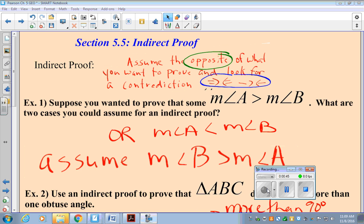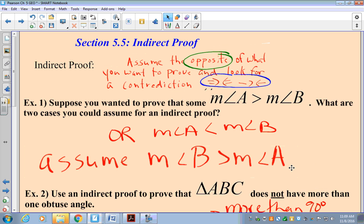So if we look at example one, we're going to suppose we want to prove the measure of angle A is greater than the measure of angle B. What are two cases you could assume for an indirect proof?